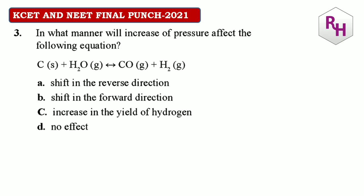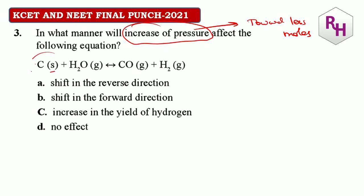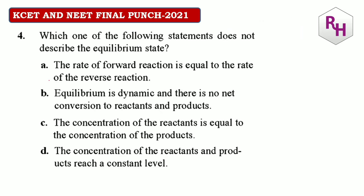In what manner will increase in pressure affect the reaction? Increasing pressure shifts equilibrium towards fewer moles. Look at the given reaction — the number of moles on each side: one side has 1 mol, the other has 1+1=2 mol. Fewer moles are on the reactant side, so increasing pressure shifts the reaction in the reverse direction.